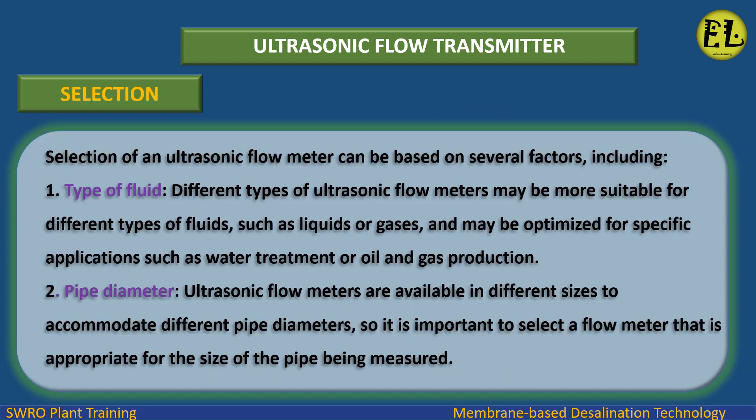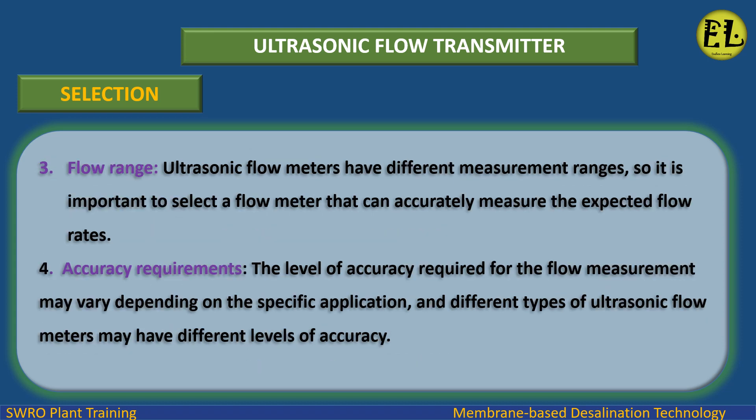Selection of an ultrasonic flow meter can be based on several factors. Type of fluid — different types of ultrasonic flow meters may be more suitable for different fluids such as liquids or gases, and may be optimized for specific applications such as water treatment or oil and gas production. Pipe diameter — flow meters are available in different sizes, so it is important to select one appropriate for the pipe being measured. Temperature and pressure — flow meters may have different ratings, so it is important to select one that can operate within the expected temperature and pressure ranges of the fluid.